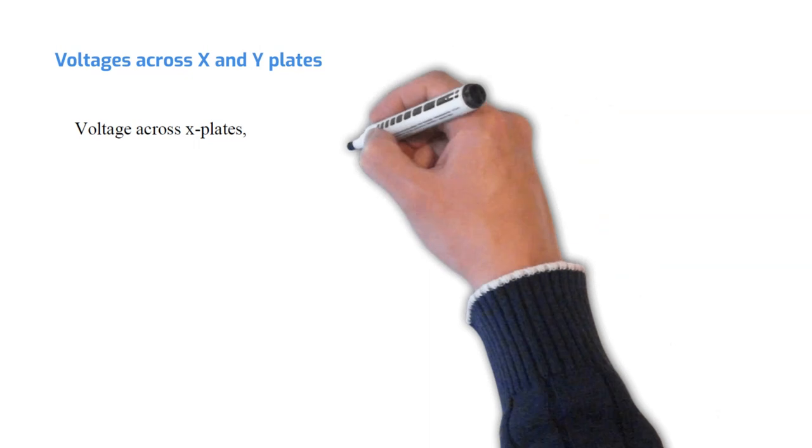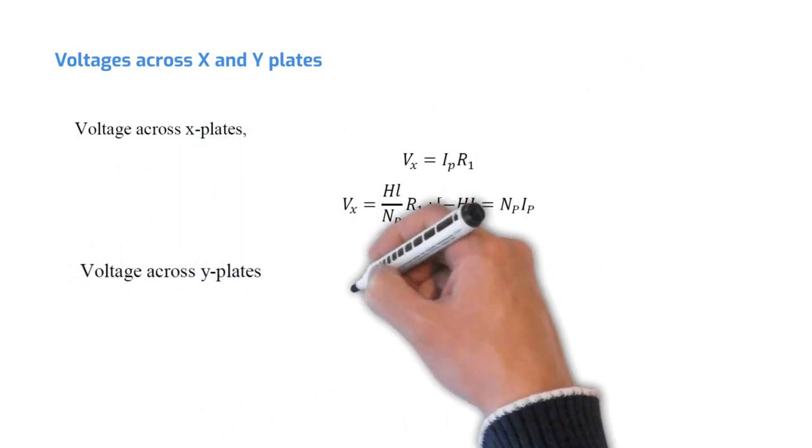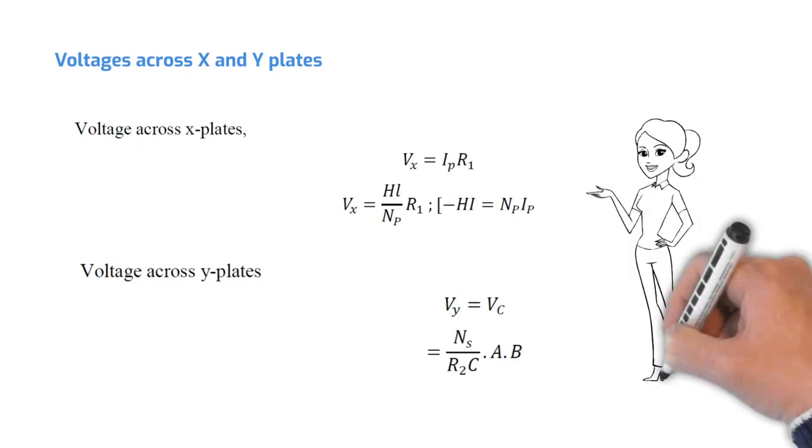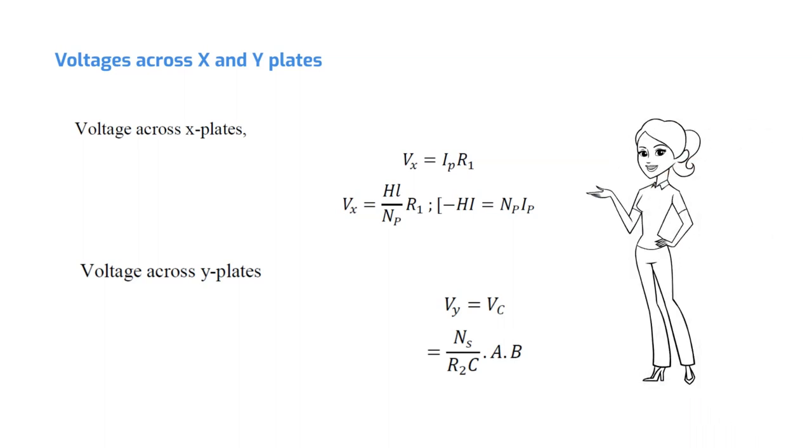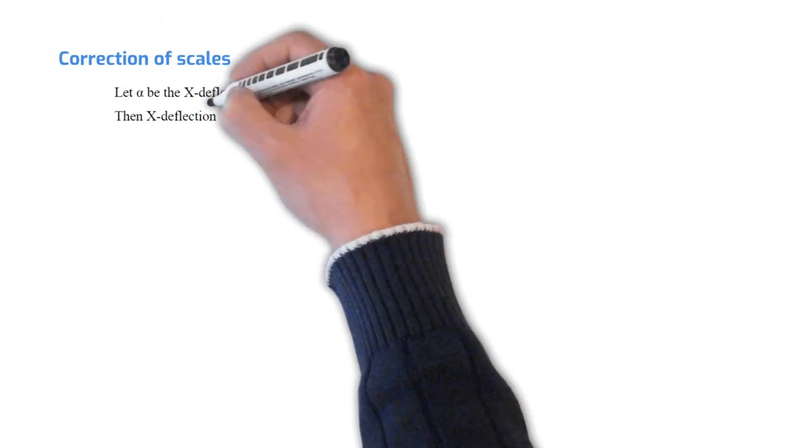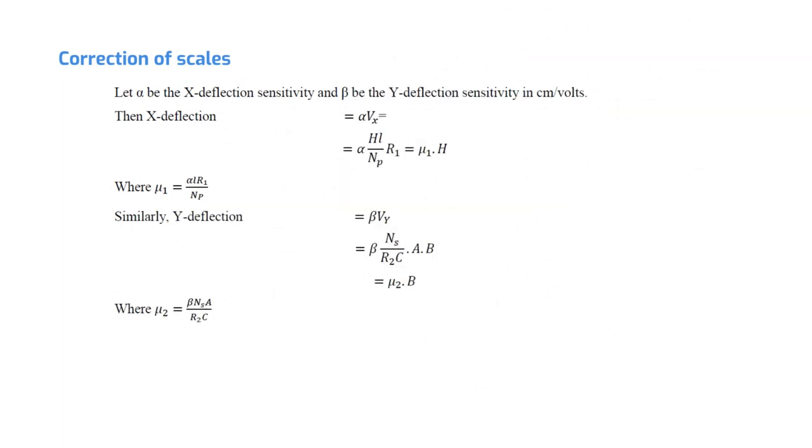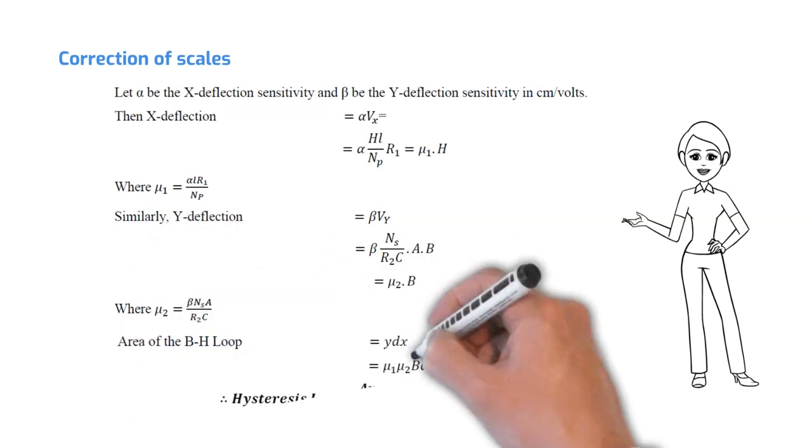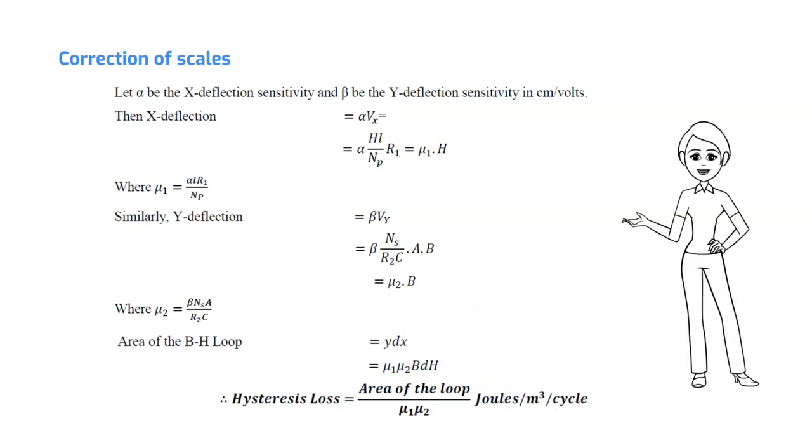Voltages across X and Y plates can be derived from these two equations as shown here. Let's consider alpha as the X deflection sensitivity and beta as the Y deflection sensitivity in cm per volt, where alpha equals to 1 over X axis scale factor and similarly beta equals to 1 over Y axis scale factor. Carefully observe the derivation of mu 1 and mu 2 here. Hence, we can say that hysteresis loss is equal to the area of the loop divided by mu 1 into mu 2.